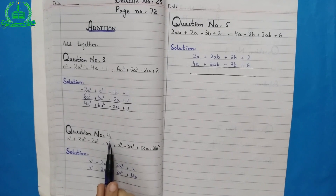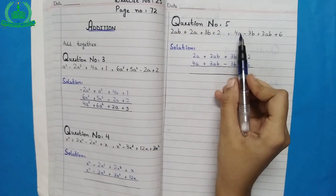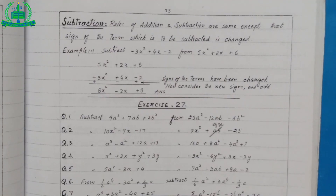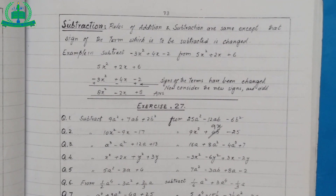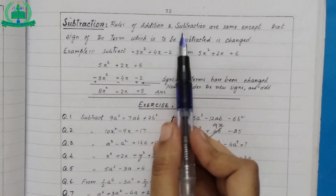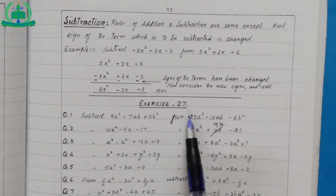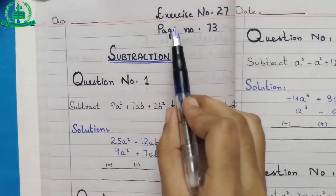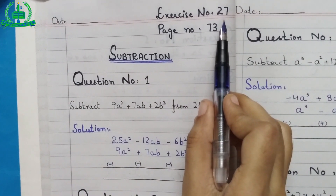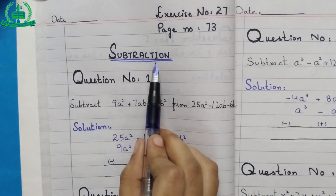Do question number 4 and question number 5 by yourself. Now open page number 73, exercise number 27. Start exercise number 27 with the heading of subtraction.